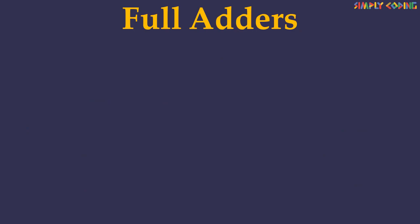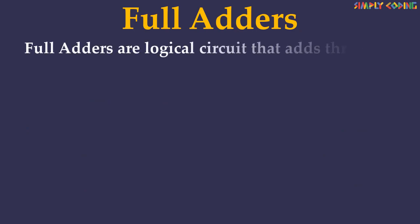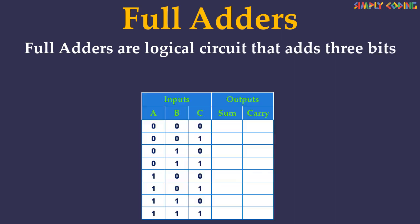Now let's take a look at full adder. Full adders are logical circuits that add 3 bits. Let's say we have 3 inputs A, B and C. We know for 3 inputs there are 2 raised to the power 3, or 8 combinations of input values of 0 and 1.